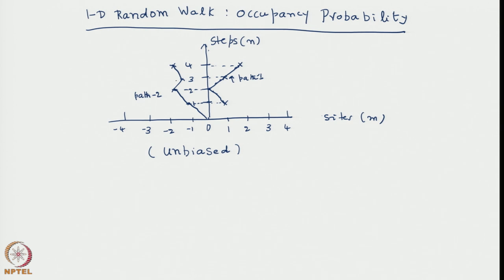A particular realization has to be repeated several times and several realizations need to be obtained to find some average behavior. So the occupancy probability is the quantity of interest. One will ask: what is the probability that after n steps a random walker occupies a particular state, say m equal to minus 2? One thing we know is that if he takes n steps he should be lying somewhere between minus n to plus n.